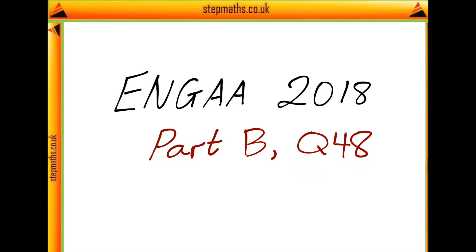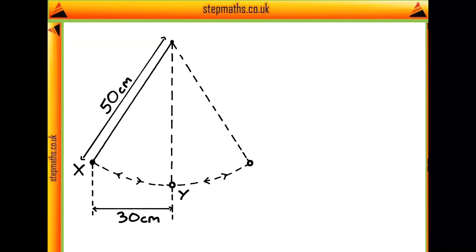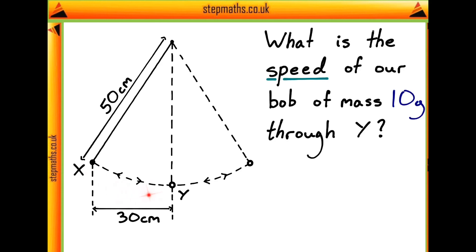Here we're going to look at question 48 of the Enger 2018 paper. In this question, we're given this diagram which represents a pendulum bob hanging by a light and extensible string of length 50 centimetres. We're told that our bob is released from rest at this position here, x. And then the question asks us, what is the speed of our bob of mass given here through our position y?